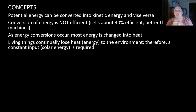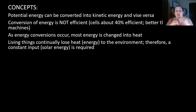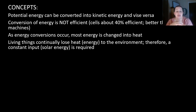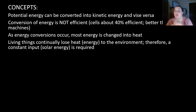Some key concepts: potential energy can be converted into kinetic energy and vice versa — they go back and forth. Conversion of energy is not very efficient; cells are about 40% efficient, which is actually a lot better than most machines, because a lot of energy is transferred as heat. As energy conversions occur, most energy gets changed into heat, and living things continually lose heat to the environment. Therefore we need a constant input of energy, which in our case comes from the sun.